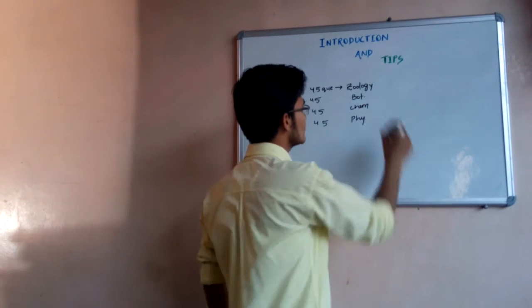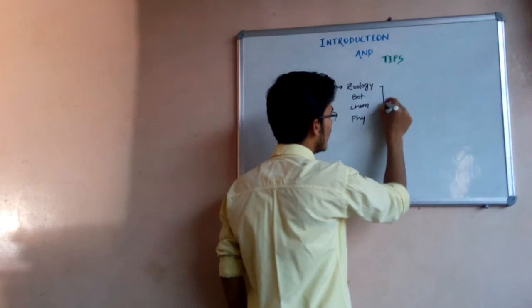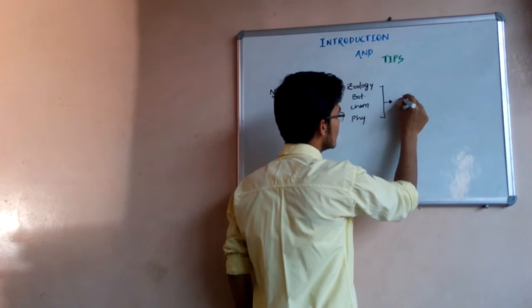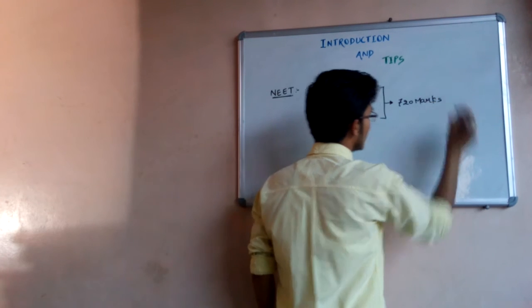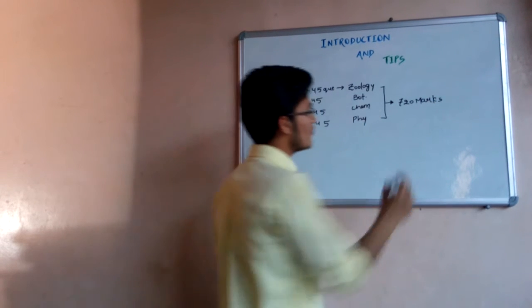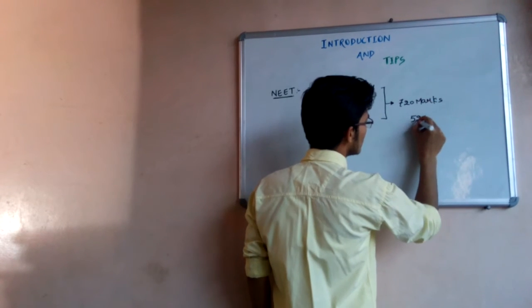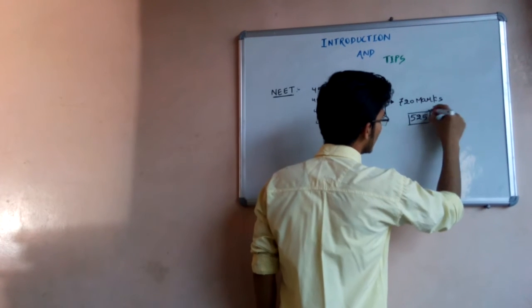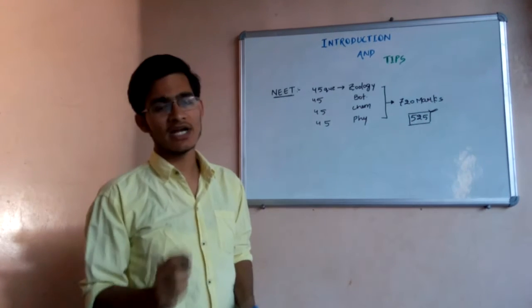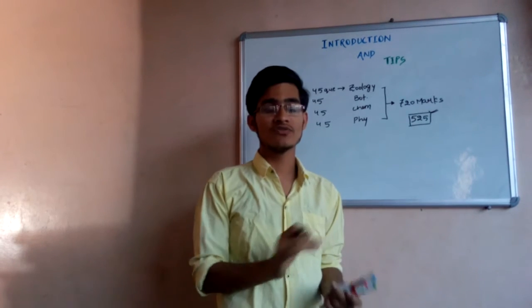To get a good rank, you have to secure approximately 525 marks to be in a safer zone. Here are some tips and advice, and the names of books which you need to refer to get these marks or even more.